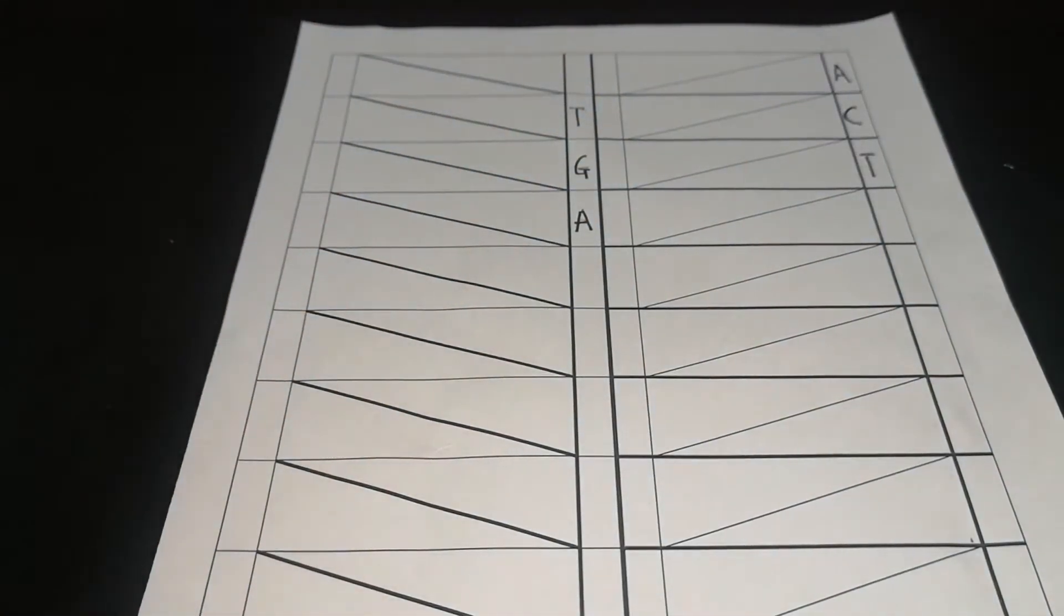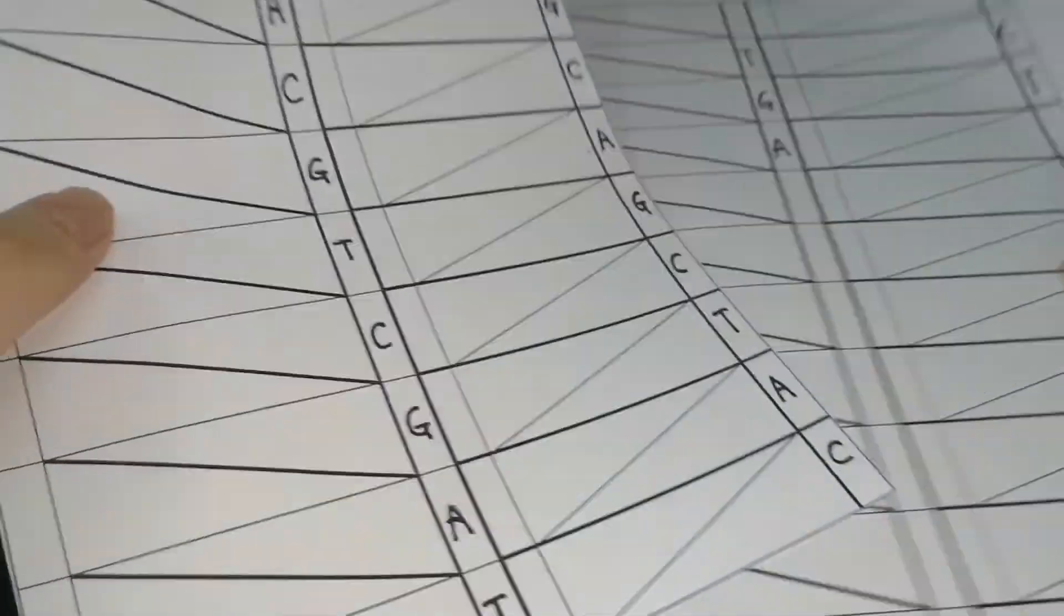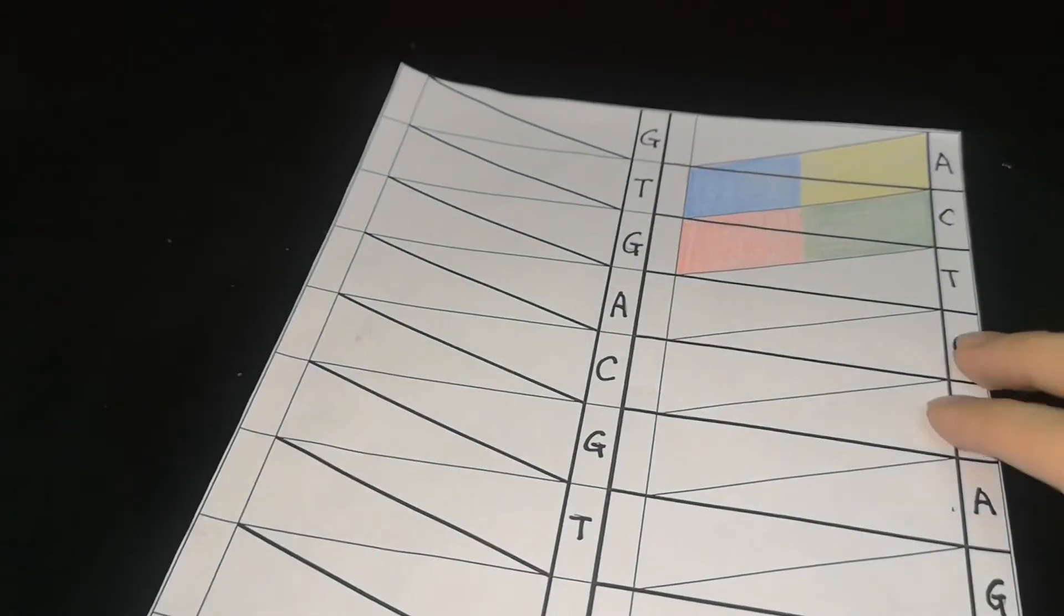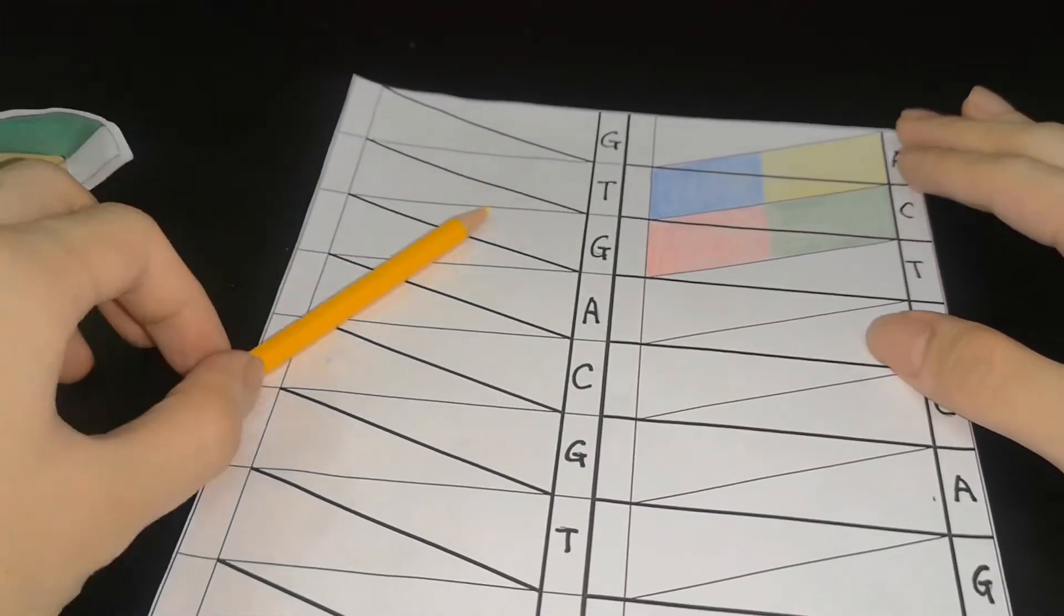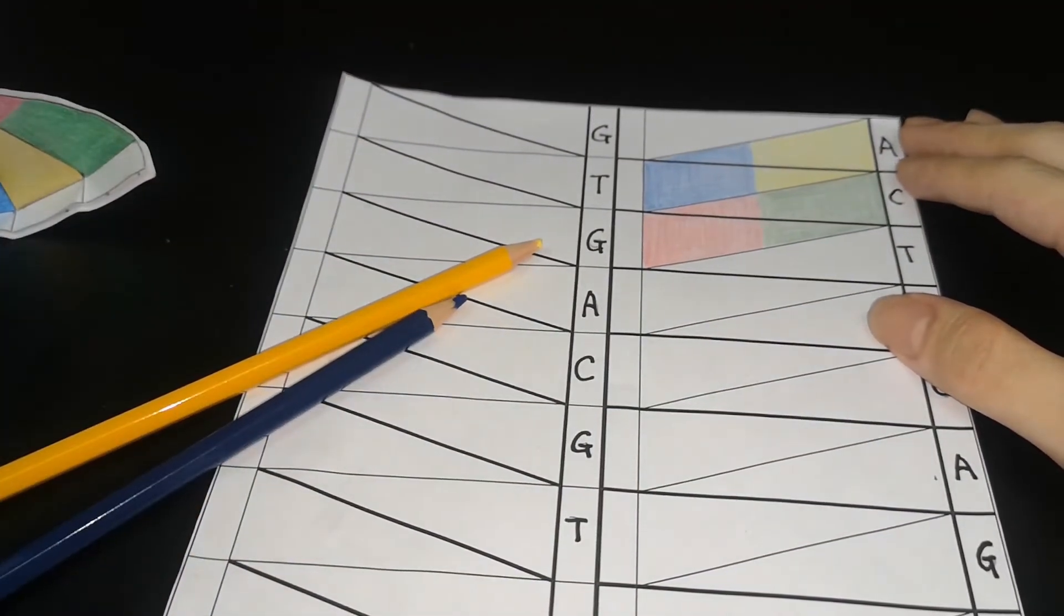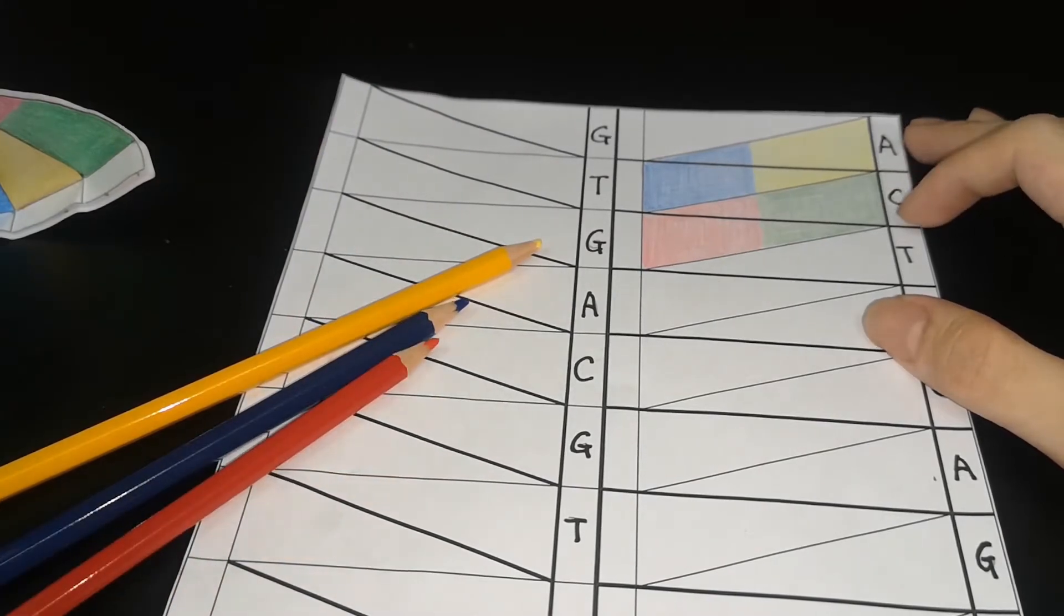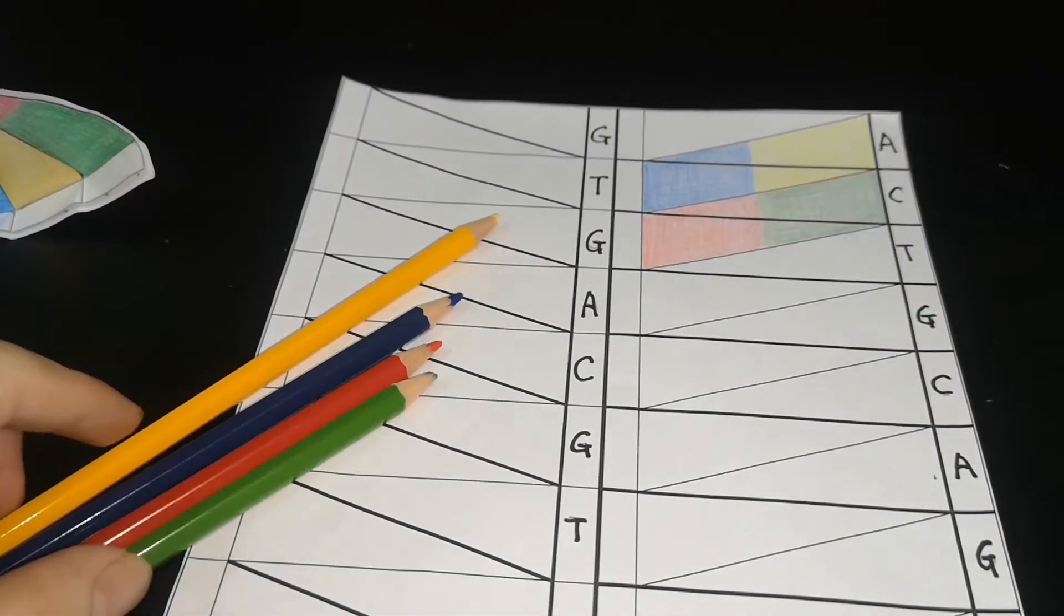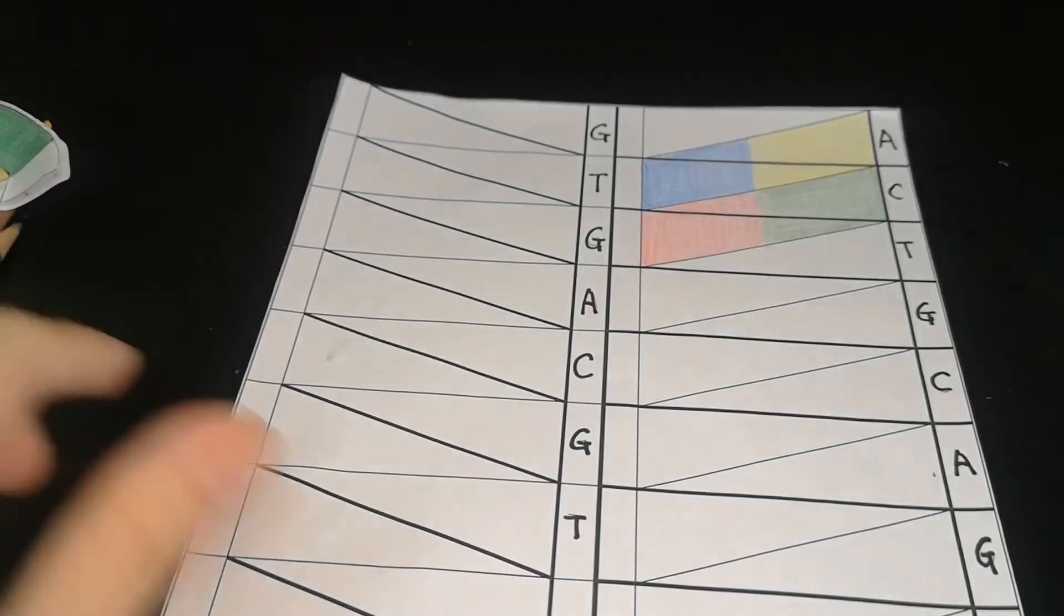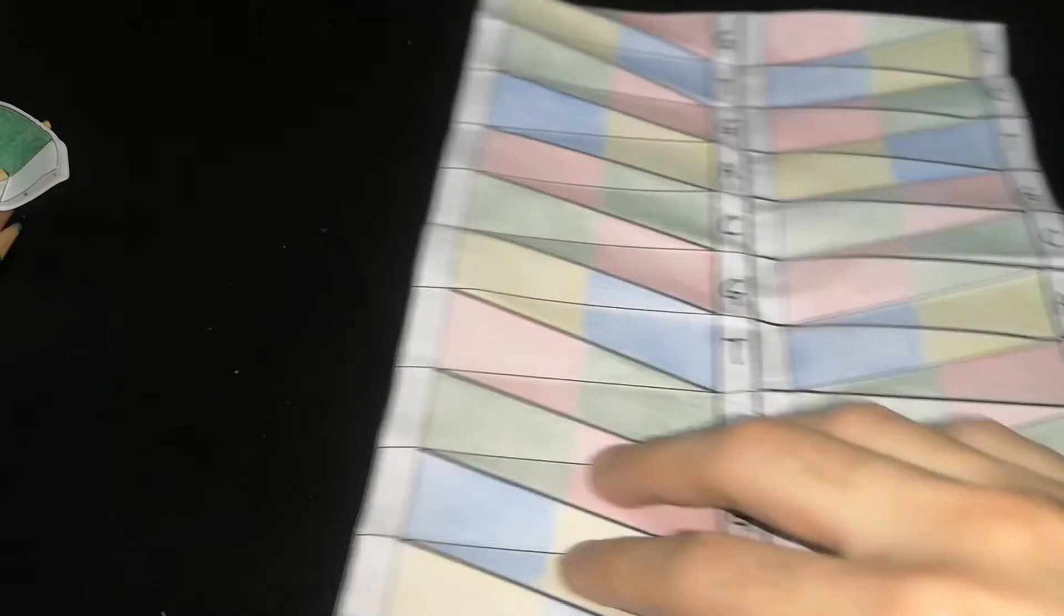Then you can assign a color for each letter. For example, yellow for letter A, blue for letter T, red for letter G, and green for letter C. Color all the code in the template and you will get something like this.